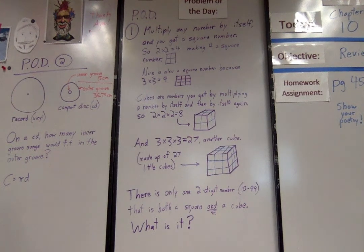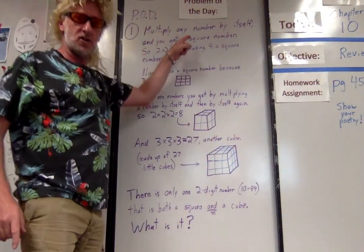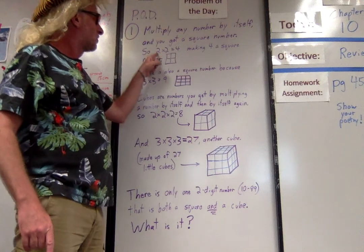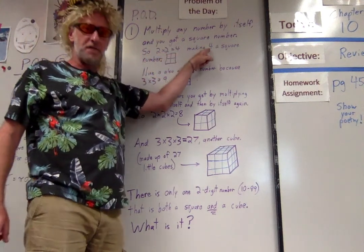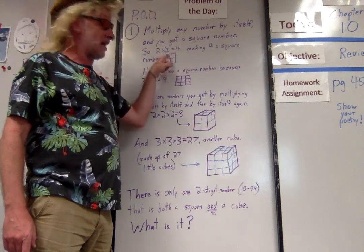Let's take a look at our first problem of the day everybody. Number one says you're gonna multiply any number by itself, you're gonna get a square number, aren't you everybody? Two times two is four, making four a square number. That's two by two, that square right there.